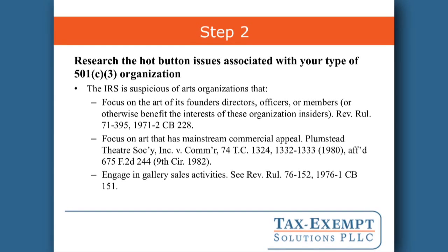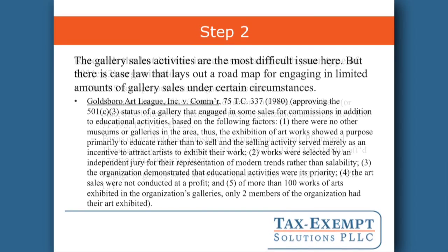Step two: research the hot-button issues associated with your type of 501 organization. In the case of HAO, it's an arts organization. The IRS is mainly suspicious of arts organizations that focus on the art of its founders, directors, officers, or members — conflict of interest issues. Also, organizations that focus on art that has mainstream commercial appeal. A 501c3 arts organization should focus on art that has artistic merit and needs the public support of a 501c3. Lastly, the IRS is suspicious when organizations engage in gallery sales activities. The gallery sales activities are the most difficult issue here — the IRS has a long history of rejecting arts organizations that do this. But there is case law that provides a roadmap for when gallery sales can be acceptable, including a case called Goldsboro Art League v. Commissioner, in which the court approved gallery sales under certain circumstances.